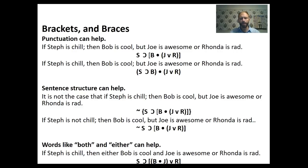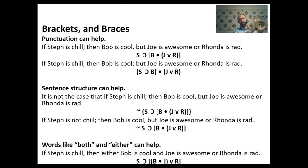And words like 'both' and 'either' can help even with brackets. 'If Steph is chill, then either Bob is cool and Joe is awesome or Rhonda is rad.' The 'either' opens a parenthesis — Bob is cool and Joe is awesome is the first disjunct, and Rhonda is rad is the second: S horseshoe [(B dot J) wedge R].